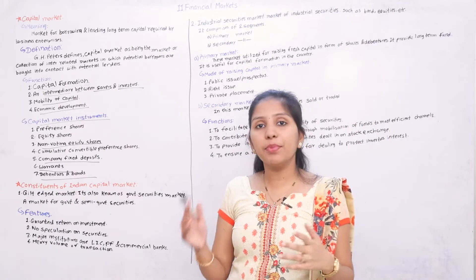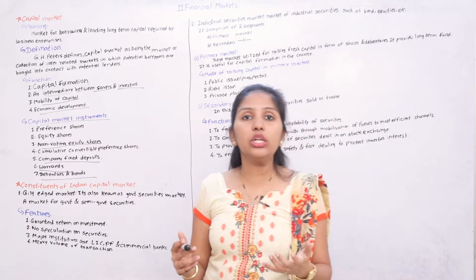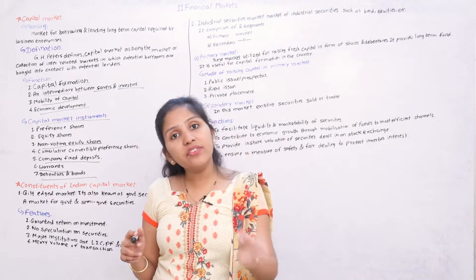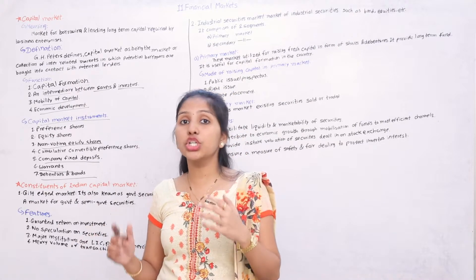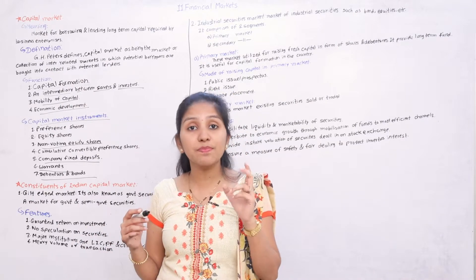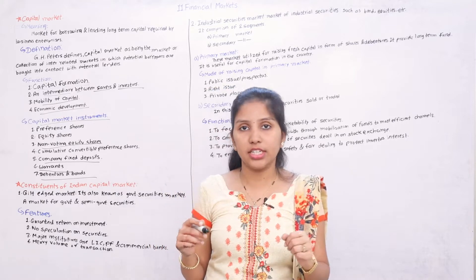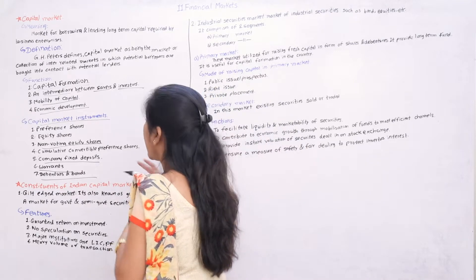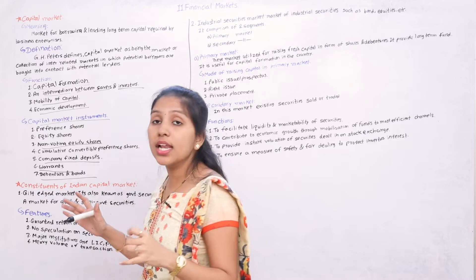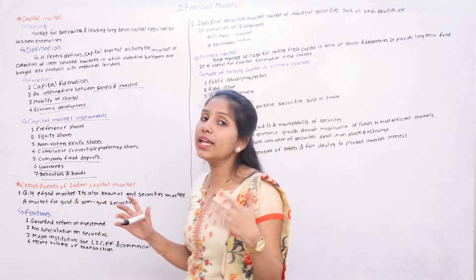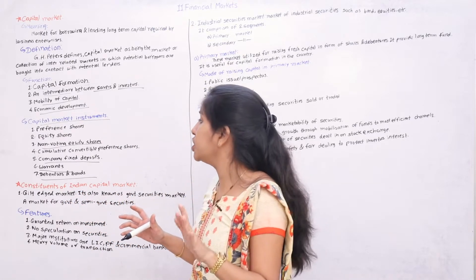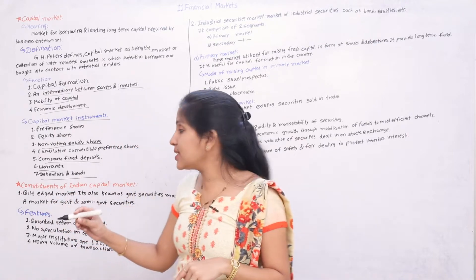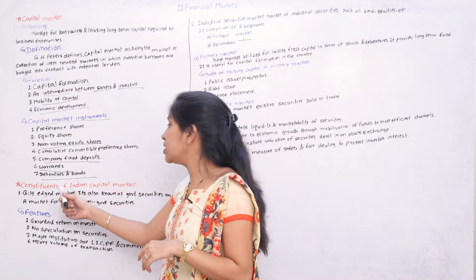We have already seen what preference shares and equity shares are in the previous chapter. Preference shares holders get a fixed rate of interest. Equity share holders are those who bear the maximum risk — they are the biggest risk bearers. Non-voting equity shares means those equity shareholders who do not have voting rights.